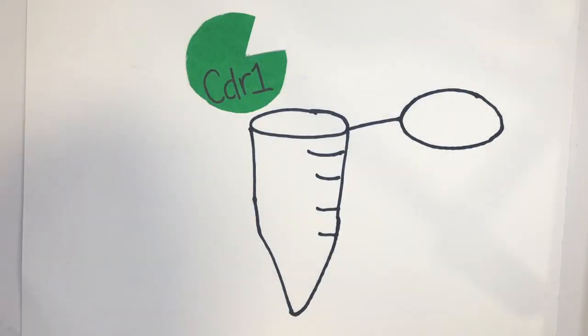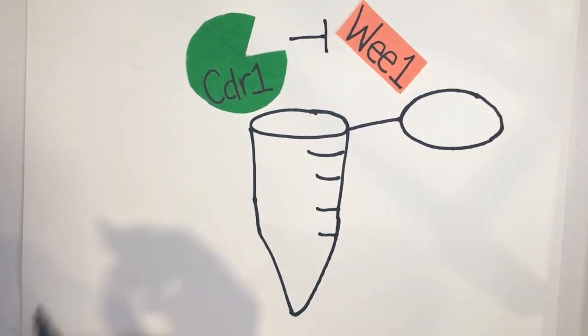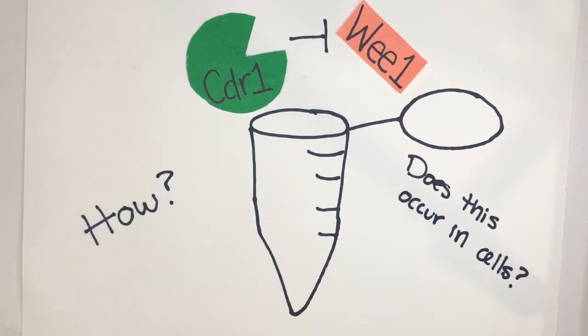But what regulates Wee1? Past research showed that in a test tube, Wee1 can be phosphorylated and inhibited by the kinase CDR1. We wanted to find out how this inhibition occurred and whether this direct inhibition occurred inside cells.